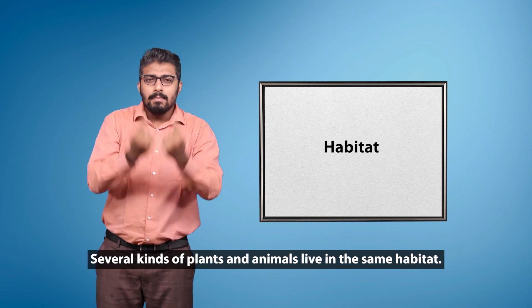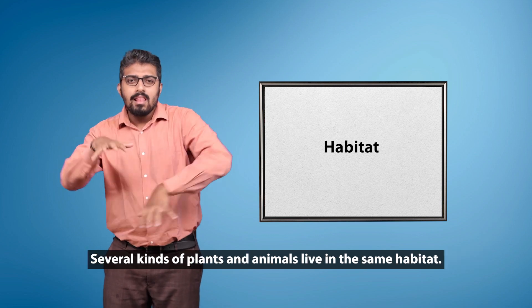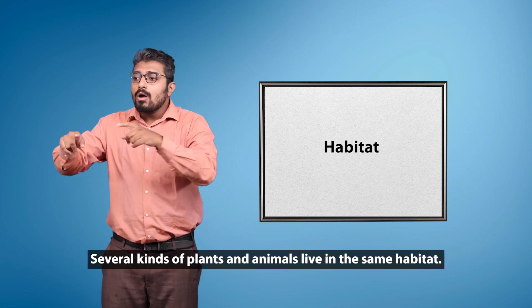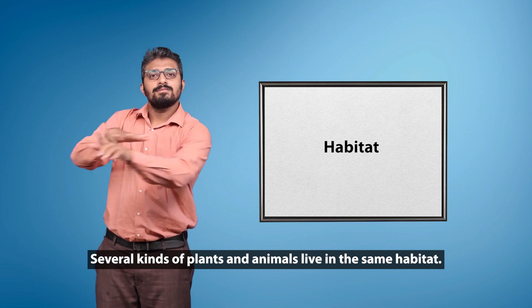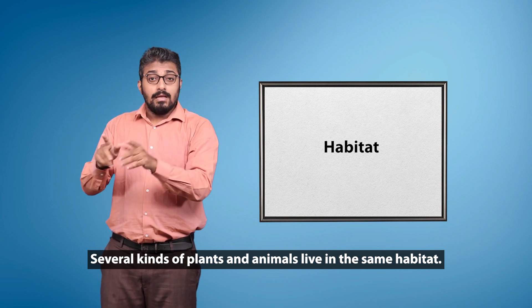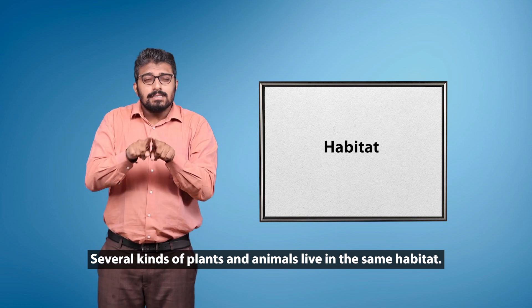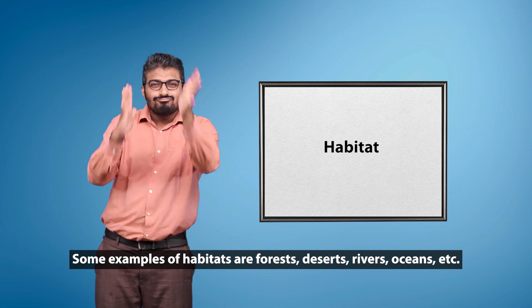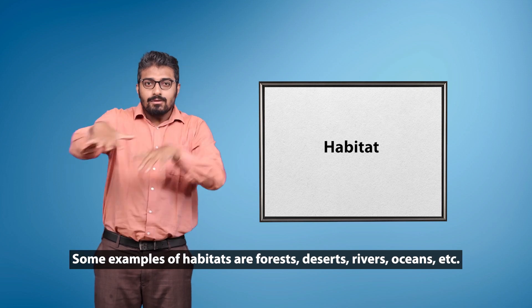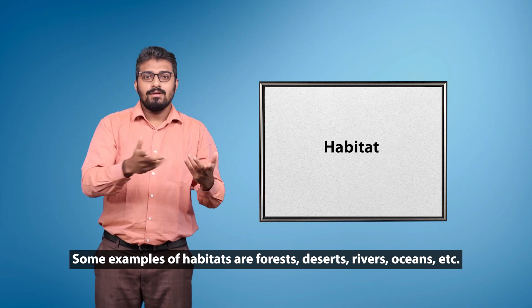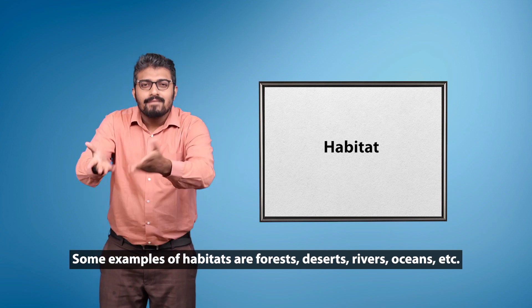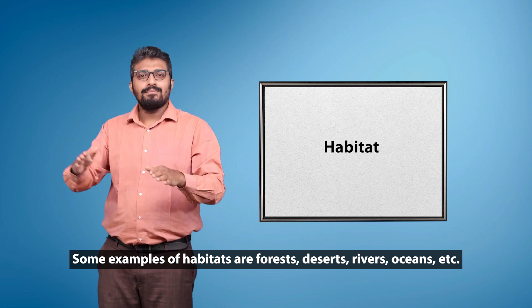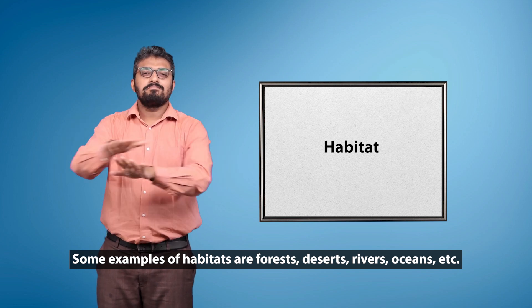Several kinds of plants and animals live in the same habitat. Some examples of habitats are forests, deserts, rivers, oceans, etc.